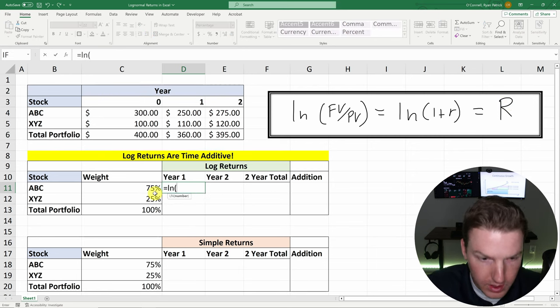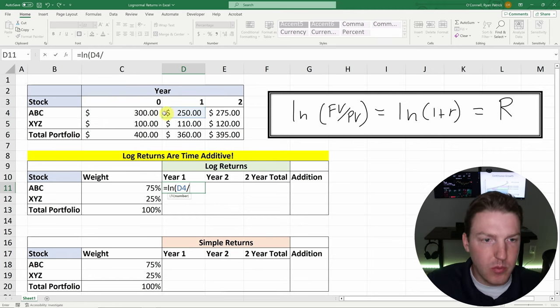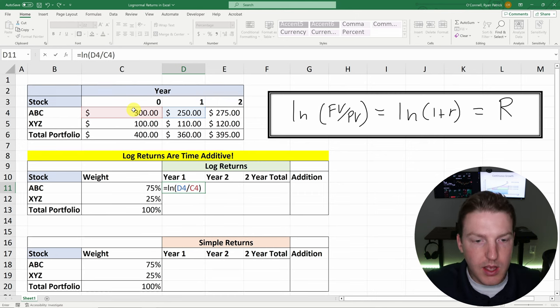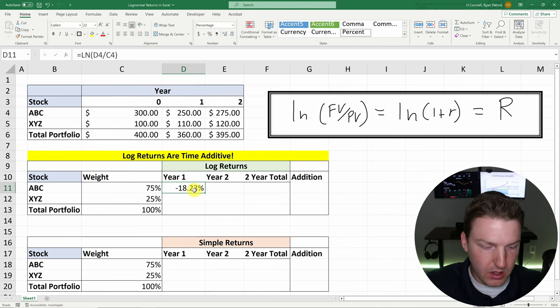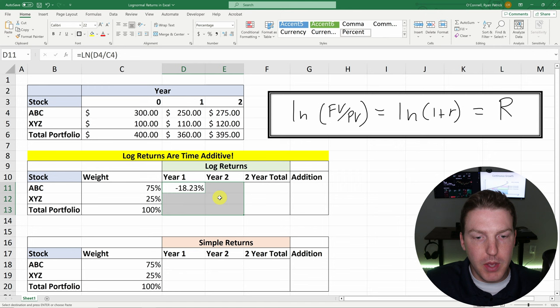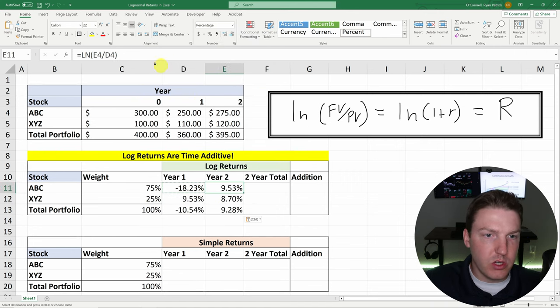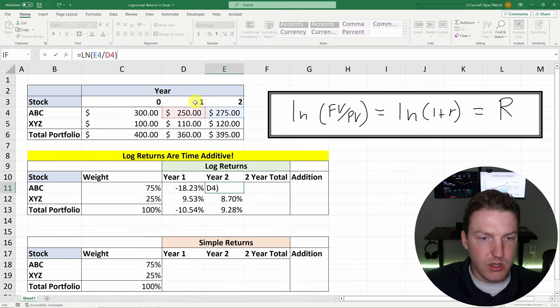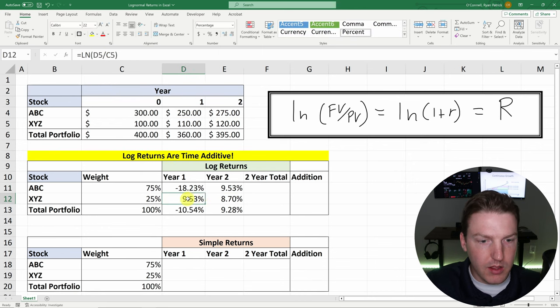So we're going to do equals LN. The future value would have been the value in year one. And the value that would have been the present value would have been what we started with at $300. Let's close that. And then I'll hit control C. I'm going to paste with a right click formulas. So we can see how it changed in year two, which was just the difference from the price of year one to year two, using the wrapped in the LN function. And then we take the same values for XYZ, and then we take the same values for our portfolio.